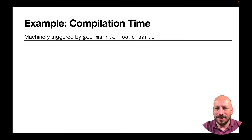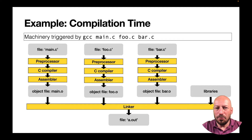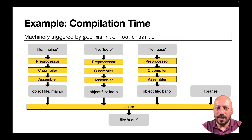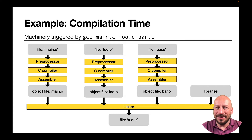Recall that gcc is actually more than just a wrapper for the C compiler and linker — it's also a wrapper for the preprocessor and assembler. When we translate source files into an executable we always trigger a big machinery. Now assume that instead of just three source files we have several hundreds of source files, each with several thousands of lines of code — then compilation time really begins to matter.